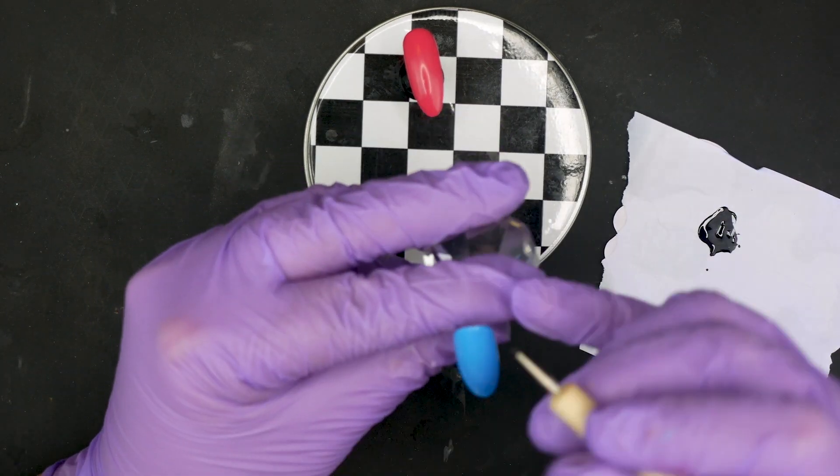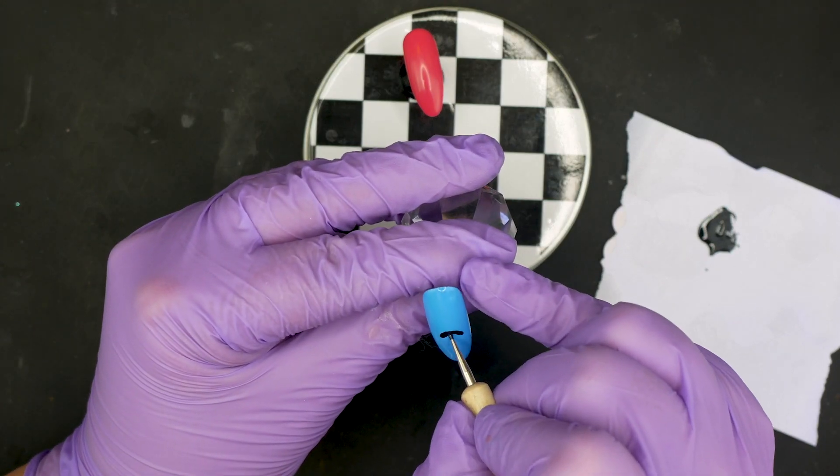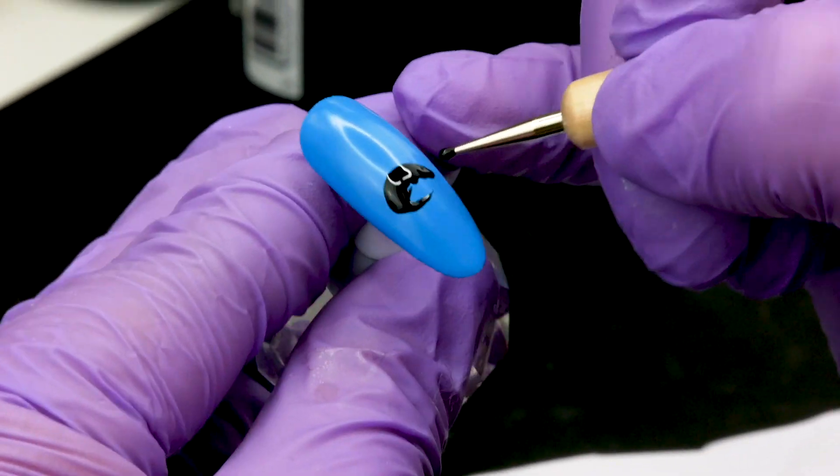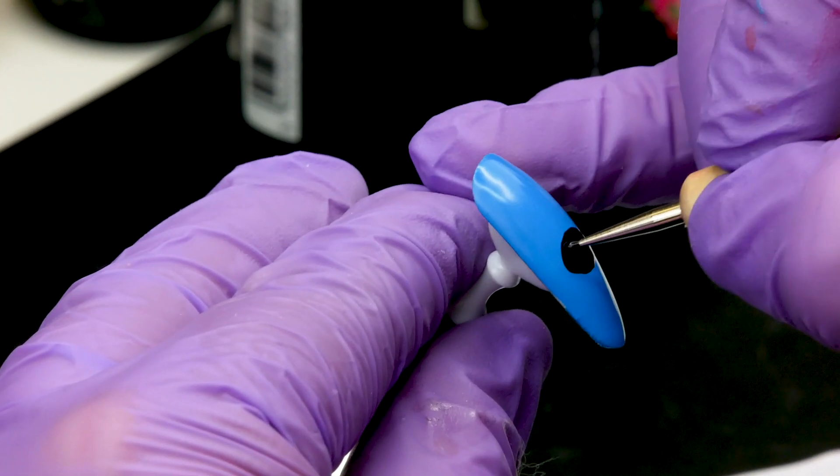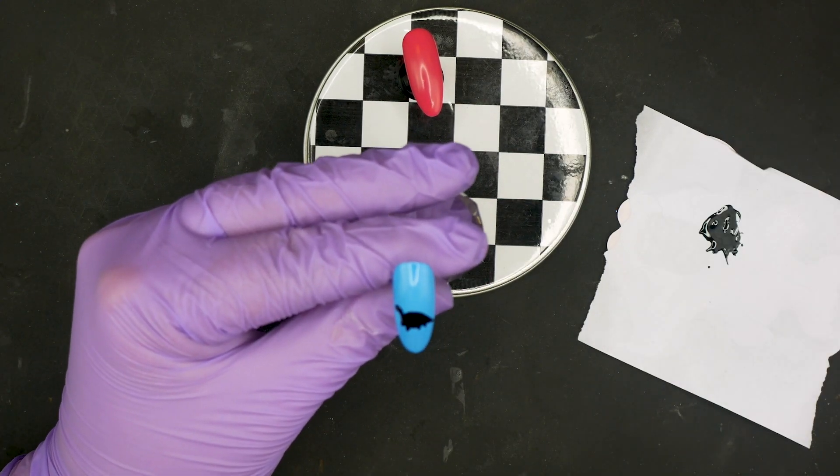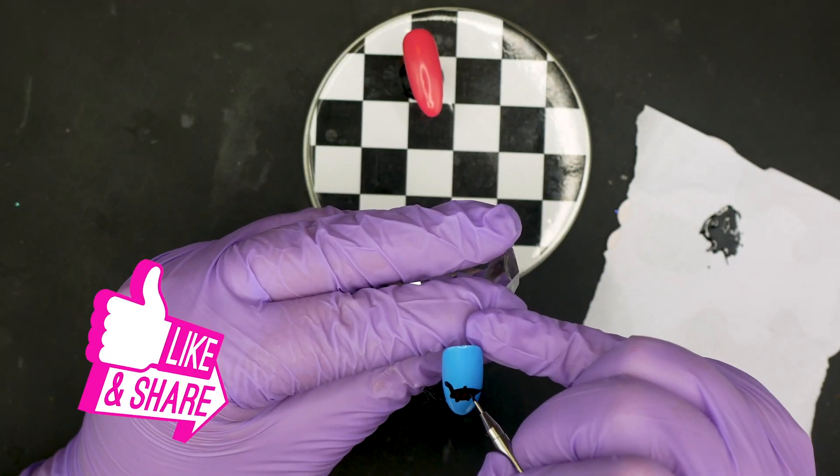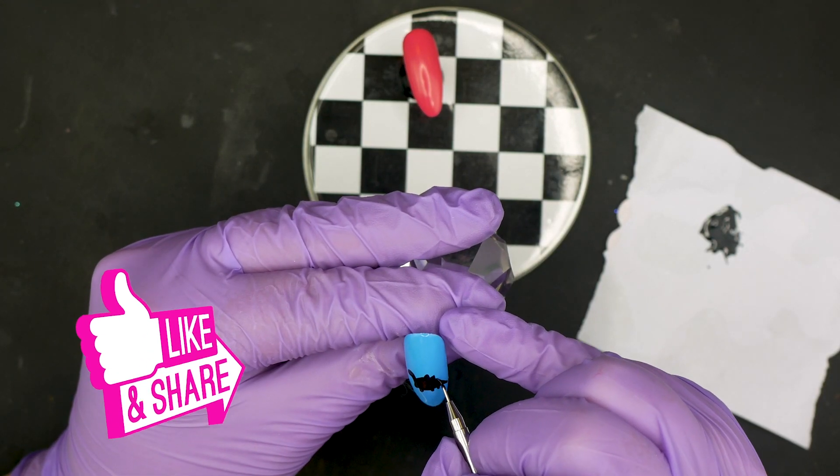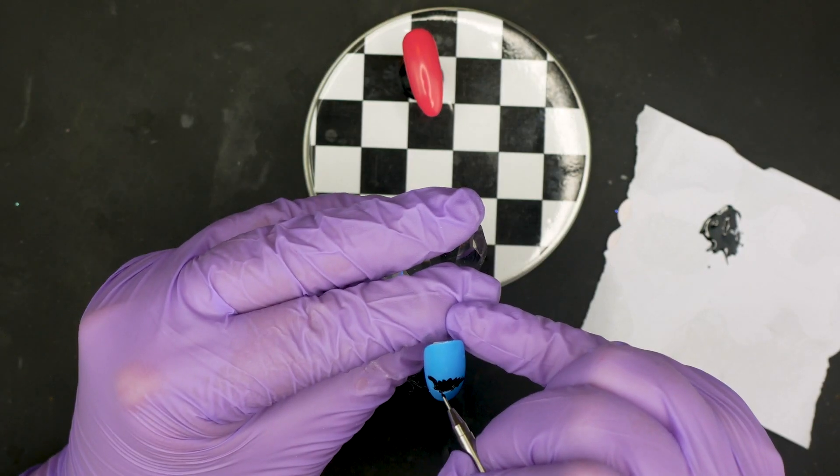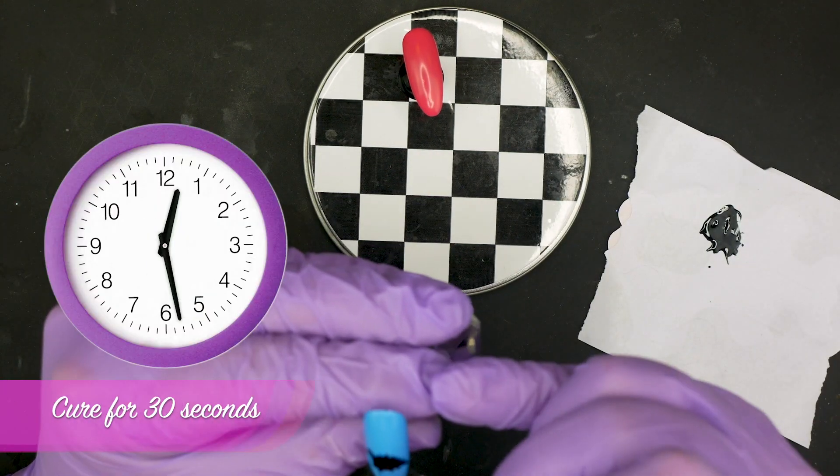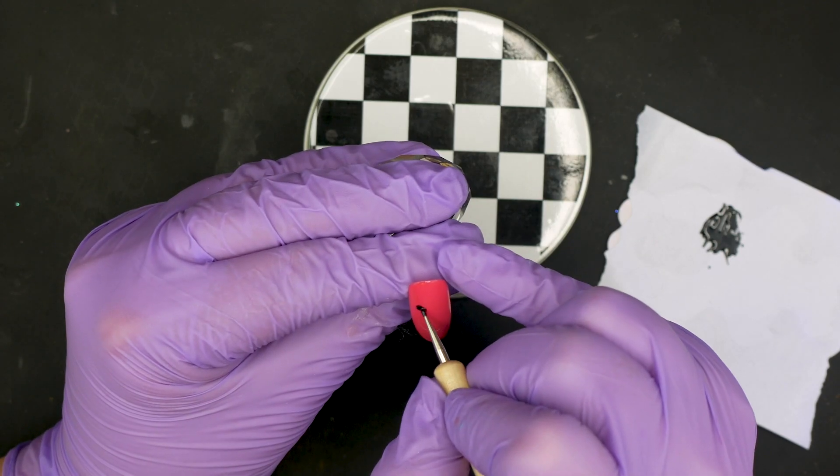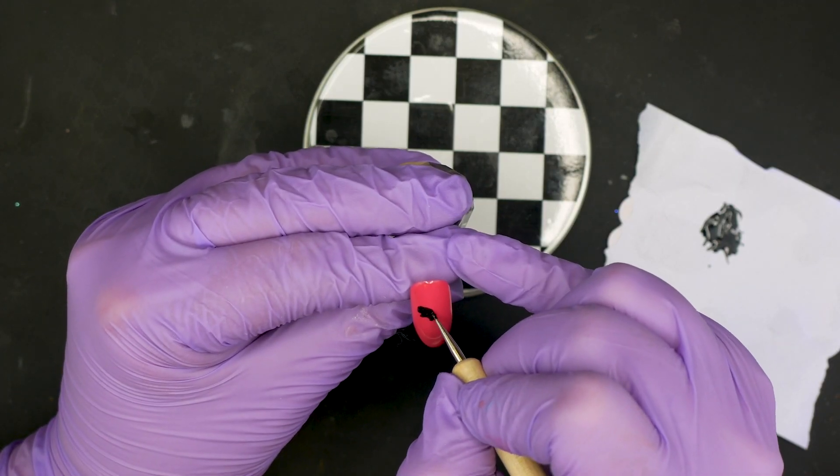We'll move on to our next one. Again with our dotting tool, put our little legs on. And then with our treble 01 brush, go back in, define, create some little spikes. We'll move on.